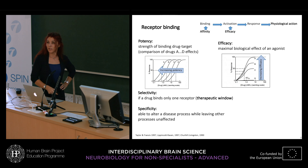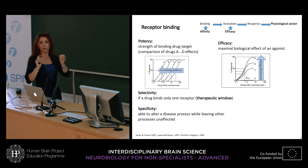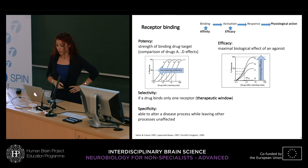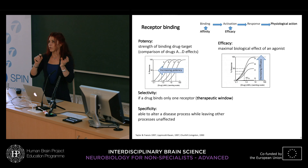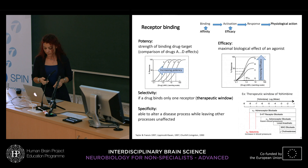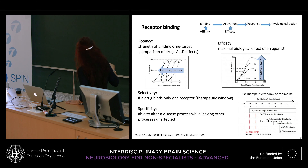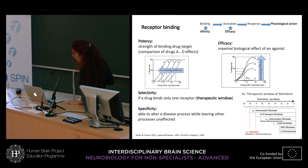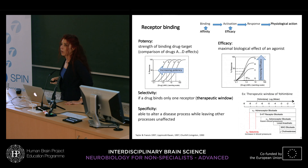Two other important terms are selectivity and specificity. Selectivity refers to whether a drug binds only one receptor or several receptors, and relates to the therapeutic window. Specificity is when a drug can alter one disease process without altering others. As an example, yohimbine is an alkaloid that at concentrations between 10 and 100 nanomolar is selective for alpha-2 adrenoceptors and can block them. But when one increases the concentration it loses selectivity, starts binding to other receptors, loses specificity, and produces opposite effects by binding to alpha-1 adrenoceptors.